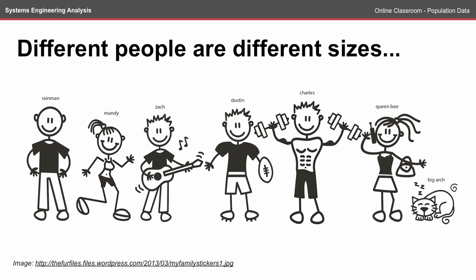In the anthropometric online classroom we looked at somebody who was 1.8 meters tall. In this online classroom we're going to take population data to try and understand whether or not the majority of the population will fit inside the LEAF electric vehicle.